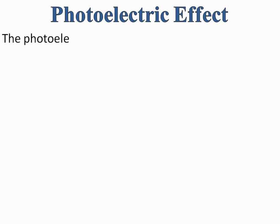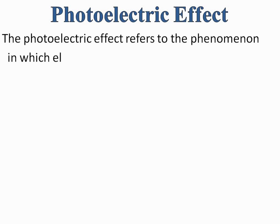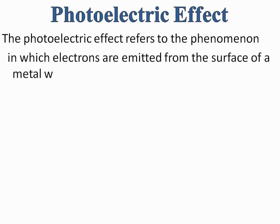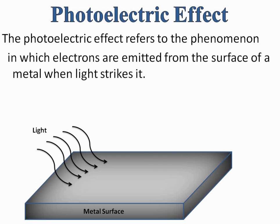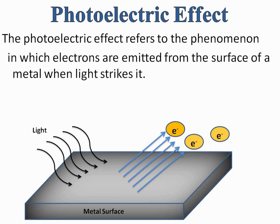The photoelectric effect refers to the phenomenon in which electrons are emitted from the surface of a metal when light strikes it. Let's understand this definition with the help of a diagram. Suppose this is a metal surface — when light strikes on the metal surface, the emission of electrons takes place. This phenomenon is called the photoelectric effect, but it is not a simple phenomenon.